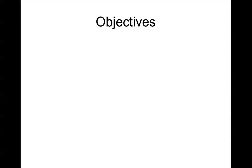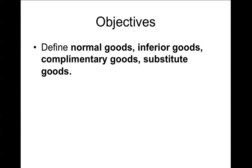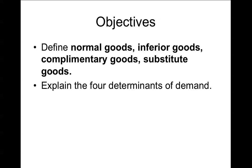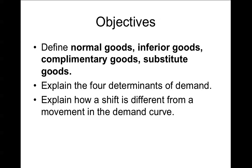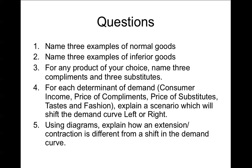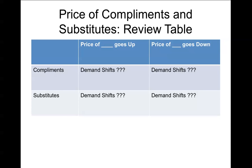Before your next class, review the objectives of this video. Can you define normal goods, inferior goods, complementary goods, and substitute goods? Can you explain the four determinants of demand? And can you explain how a shift differs from a movement in the demand curve? Please answer the five questions provided, and check the summary sheet on the last slide about shifts for the price of complements and price of substitutes. A review table is included — for example, if the price of complements goes up, which way does demand shift?